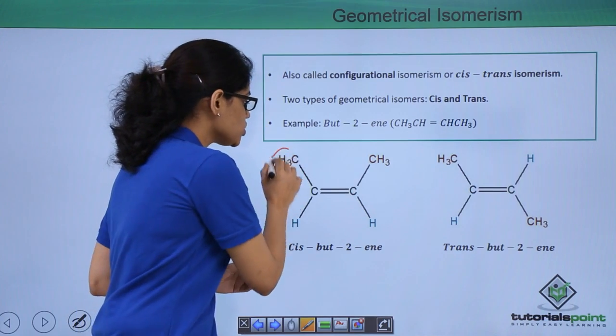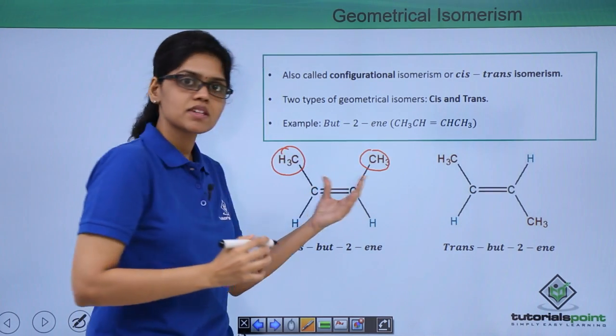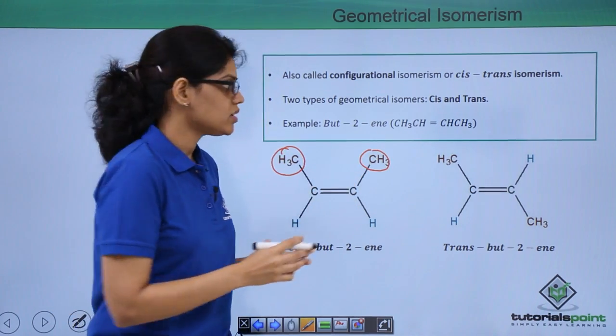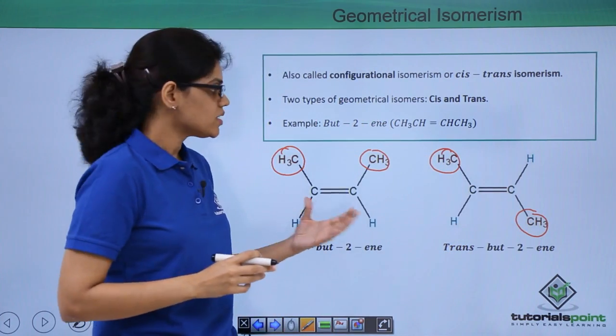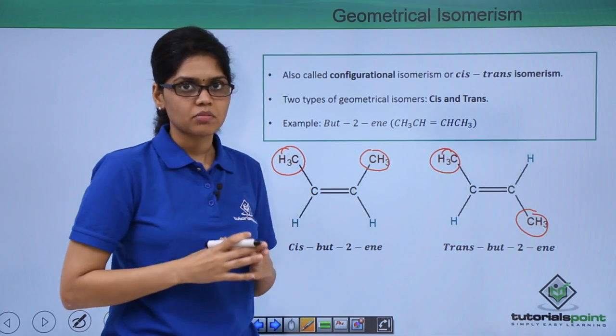One where you have the two CH3 groups on the same side of the double bond and one where you have the CH3 groups opposite to the double bond. There is no other way in which these groups can be arranged.